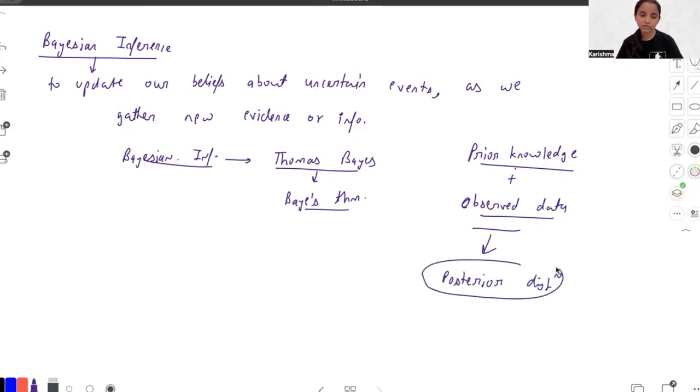The Bayesian inference involves combining the prior knowledge or beliefs about a particular event or parameter with the observed data to form a posterior distribution. This posterior distribution represents the updated beliefs or knowledge as we gather new information.